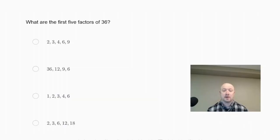What are the first five factors of 36? Is it 2, 3, 4, 6, 9, 36, 12, 9, 6, 1, 2, 3, 4, 6, or 2, 3, 6, 12, 18?